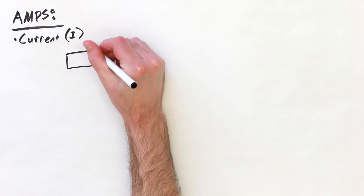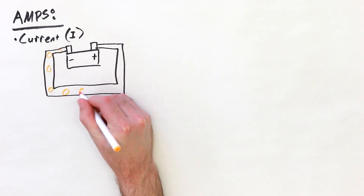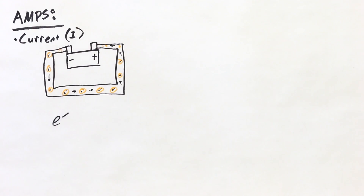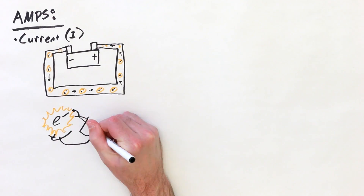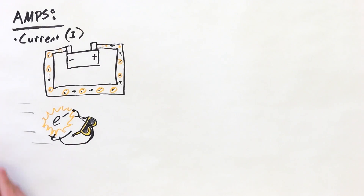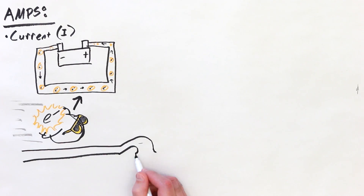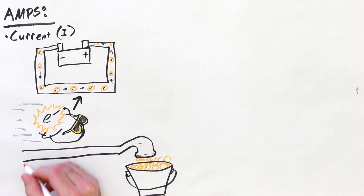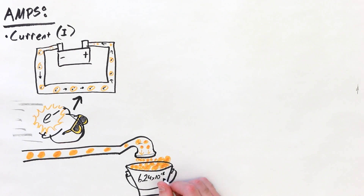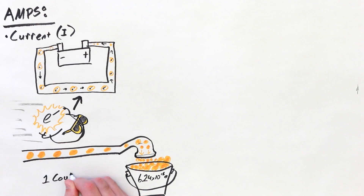Two other units you will frequently encounter when discussing or researching EVs are amps and volts. First up, let's talk about amps. The ampere, or amp, is a unit of electric current, which represents the rate of flow of electrons through a conductor, like a wire. Electrons carry electric charge, which is the property electric fields act on — much like mass is the property that gravitational fields act on. For practical purposes, this is represented as Coulombs per second, where the unit Coulomb essentially acts as a proxy for about 6.24 quintillion electrons worth of charge.